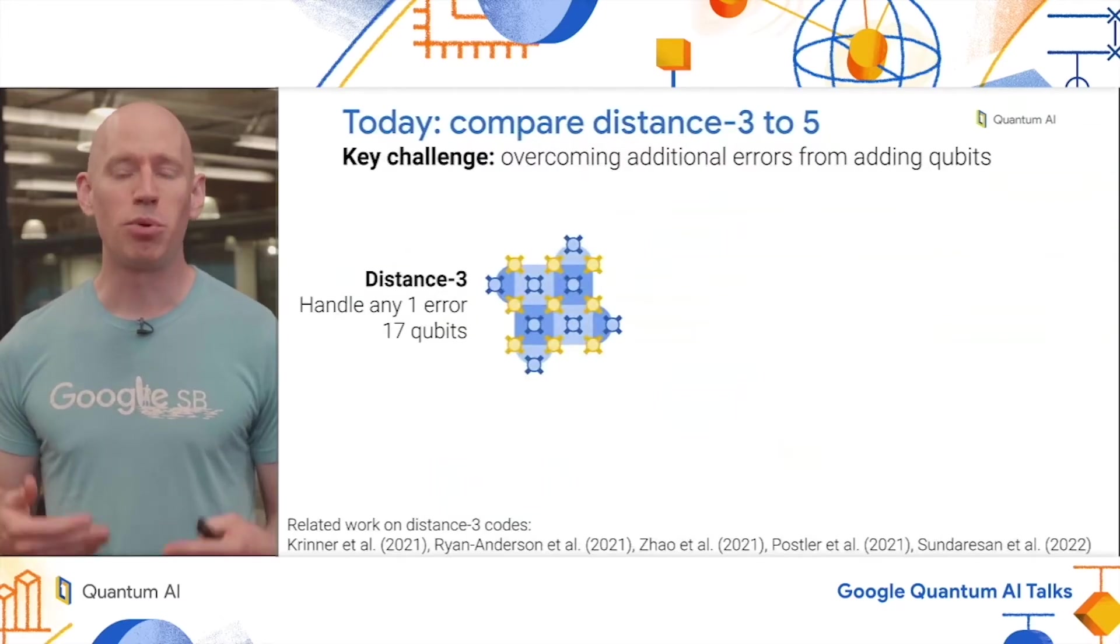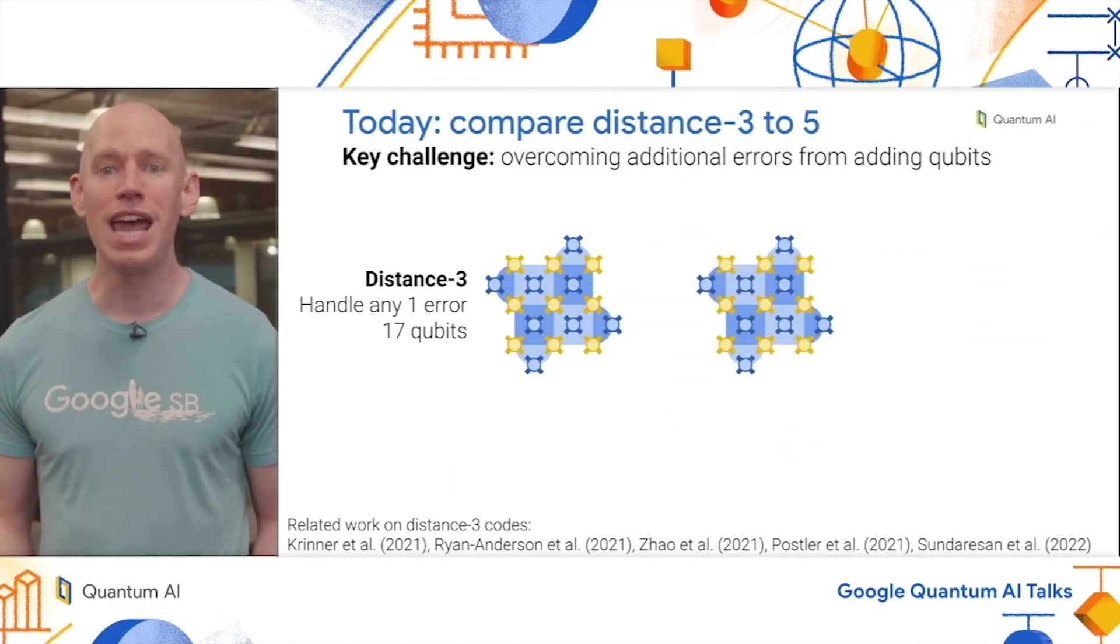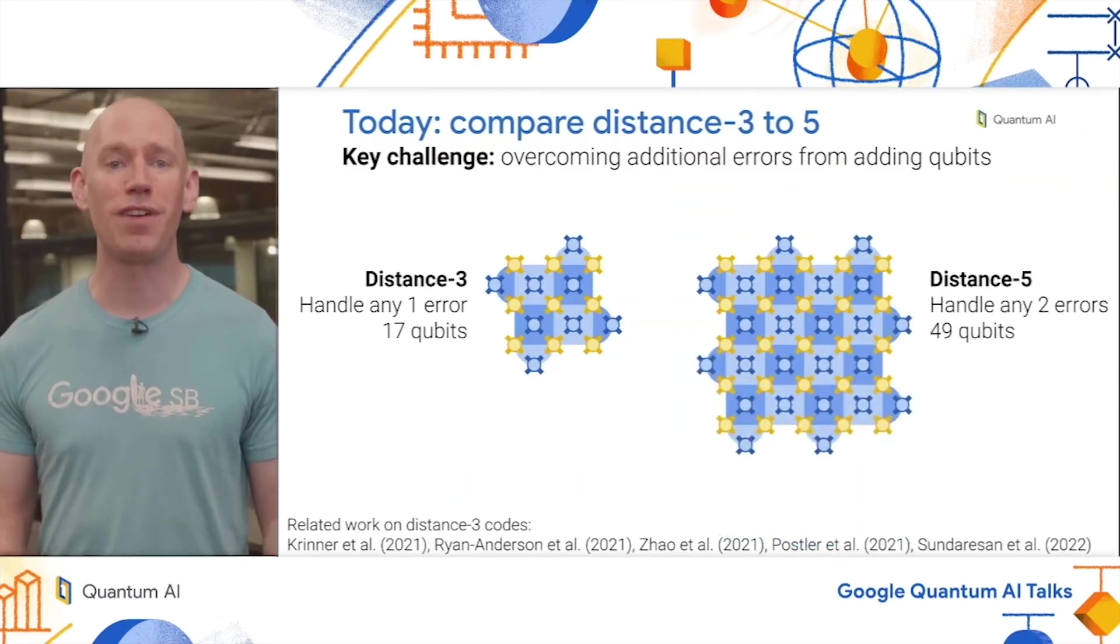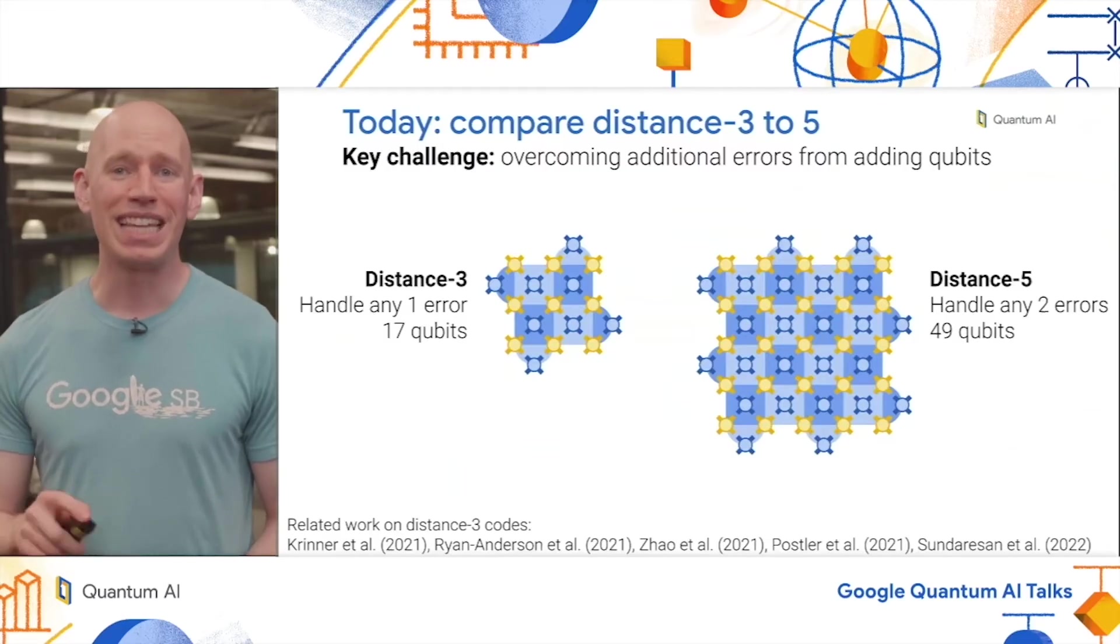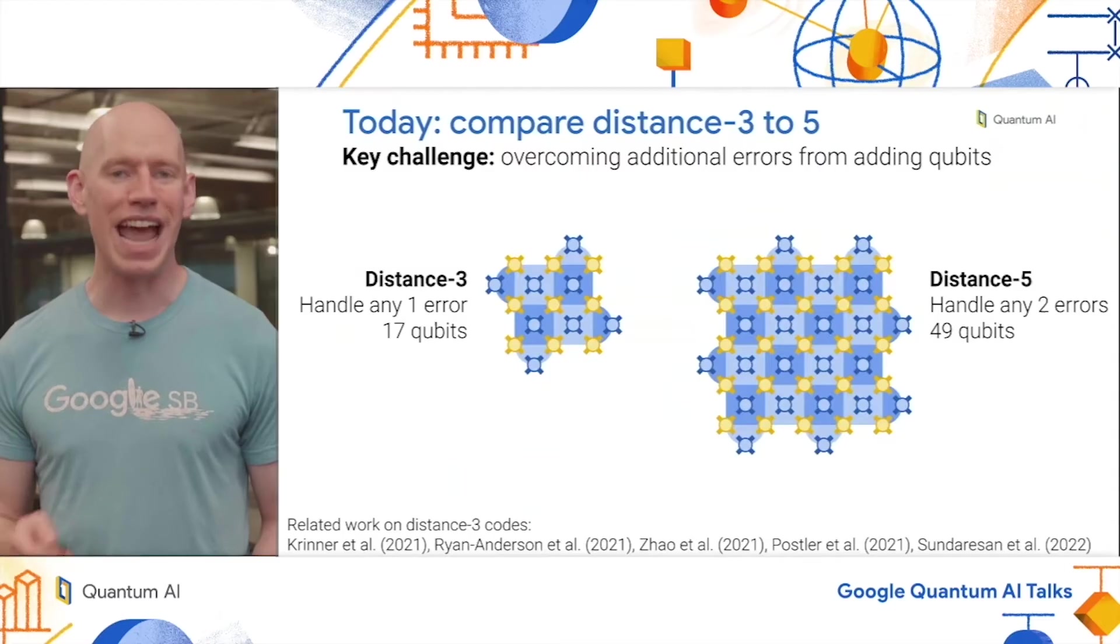Today we're taking an important step in this journey by comparing two different code sizes. We're going to start with a distance three surface code, and then compare it to a distance five surface code, which is about three times as many physical qubits and can handle two errors at once while distance three can only handle one error at a time. The key challenge here is overcoming the additional errors from adding these extra qubits. The question is, is our system performance good enough that adding these extra qubits actually improves the logical performance?